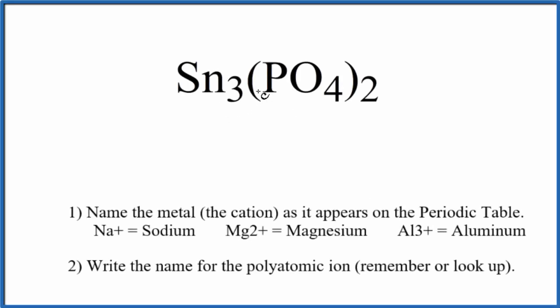To write the name for Sn₃(PO₄)₂, first we need to recognize that this PO₄ here is a polyatomic ion. This is the phosphate ion. We have two phosphate ions here.